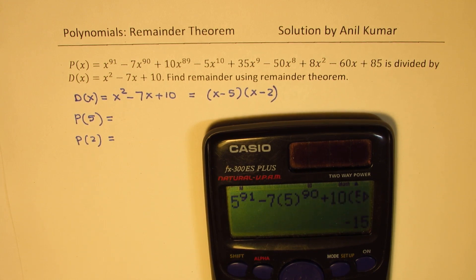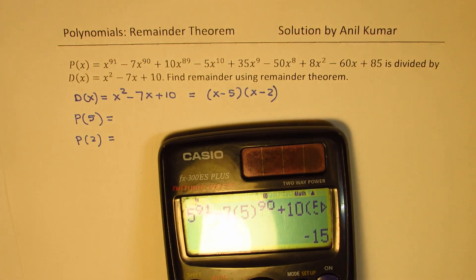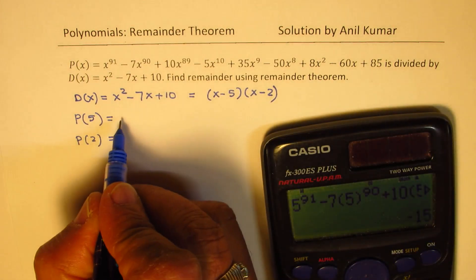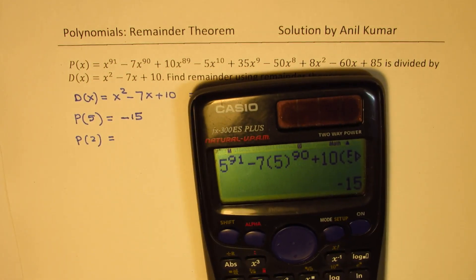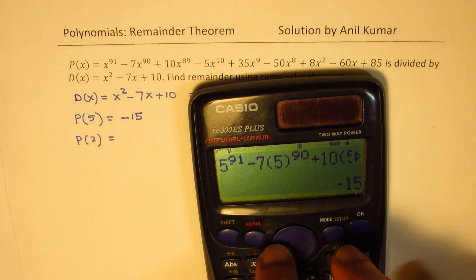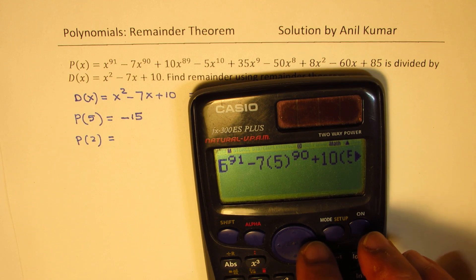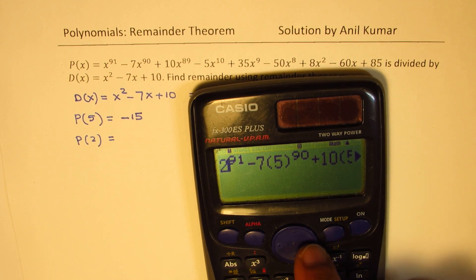So that gives us minus 15. So that gives us minus 15. Let's find the remainder when you are dividing by 2. So now I'll replace all these 5s with 2, so I'll do it one by one, that'll be faster.